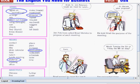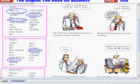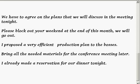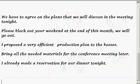Now I chose some words and made sample sentences — let's discuss them. First: Agree on something. "We have to agree on the plans that we will discuss in the meeting tonight." Block out: "Please block out your weekend at the end of this month — we will go out."